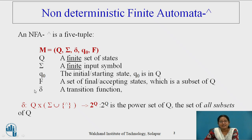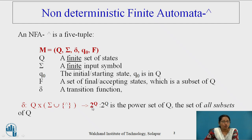Delta is defined as: the machine in any state, by processing a single symbol or null, moves to one or more states — that is, 2 raised to Q. 2 raised to Q is the power set of Q, the set of all subsets of Q.